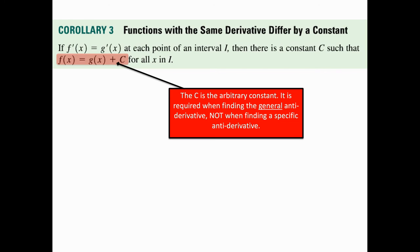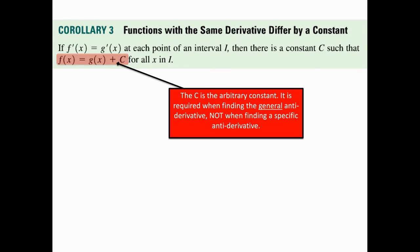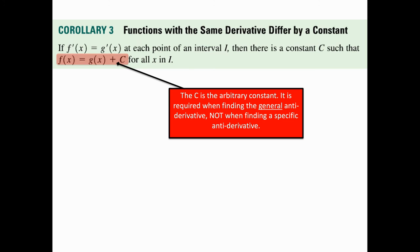Now, c is an arbitrary constant. It's required when you're finding what's called the general antiderivative, not a specific antiderivative.